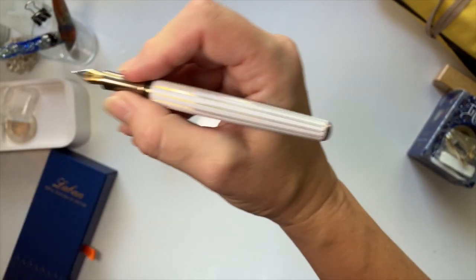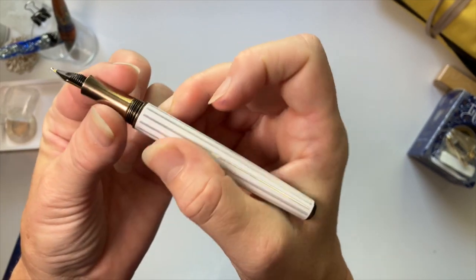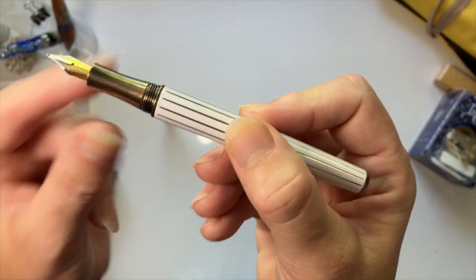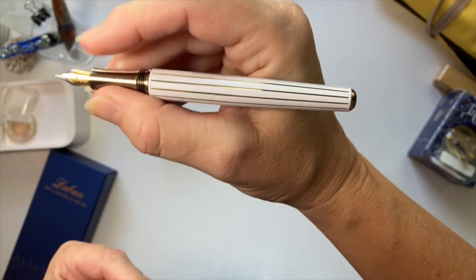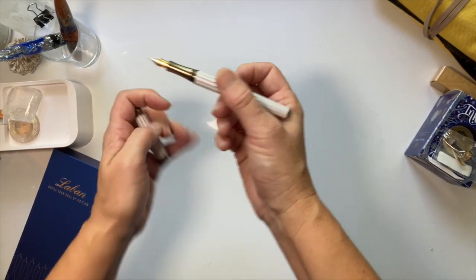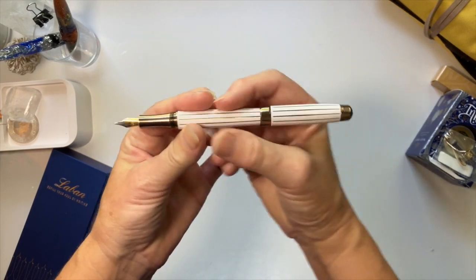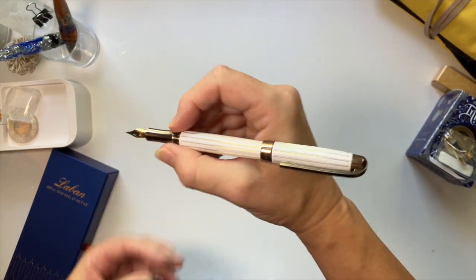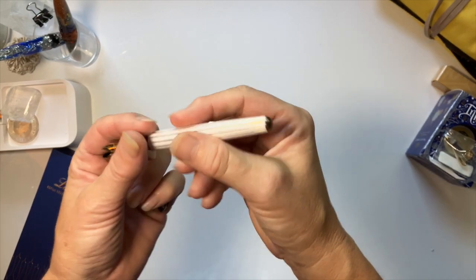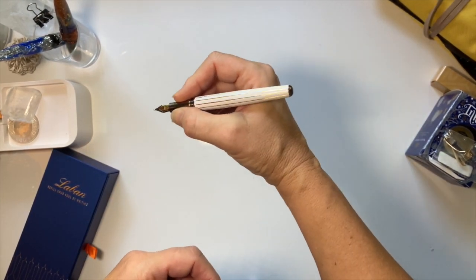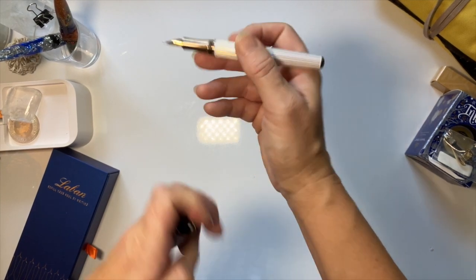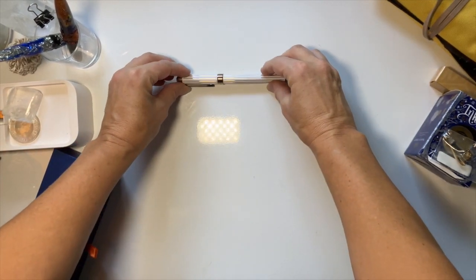It's quite hefty and weighty. This grip piece here is kind of like an hourglass shape. It's sort of comparable to my Pilot Metropolitan in girth. It feels good in my hands. Let's see if it posts. Oh yeah, that posts nicely securely on the back there. It makes it a bit back heavy for me, so I don't think I will post. I don't post most of my pens because they always sit quite nicely in my hand. It feels well balanced.